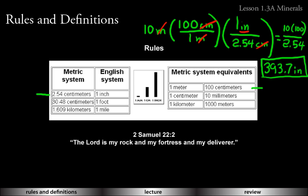Try to memorize this scripture — that would be the ideal thing to do here. 2 Samuel 22, verse 2: 'The Lord is my rock and my fortress and my deliverer.' Scripture uses analogies of the earth and earth materials many times because those are things we're familiar with. We understand what a rock means — something strong, something unmovable. The Lord is my rock.